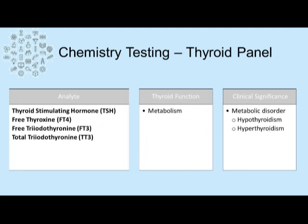Thyroid panels include the hormones thyroid-stimulating hormone, free thyroxin, free triiodothyronine, and total triiodothyronine — commonly referred to as free T3 and total T3. These hormones function in metabolism and can indicate the presence of hypo- or hyperthyroidism, depending on their values.